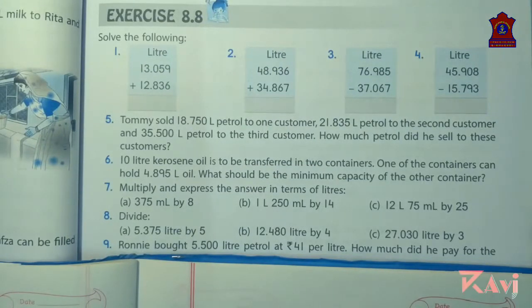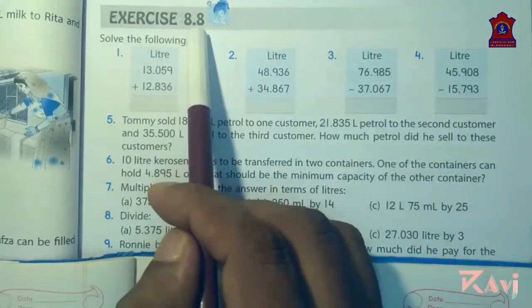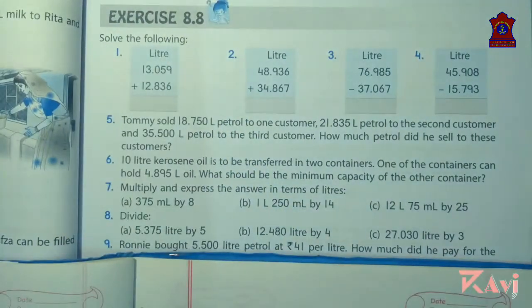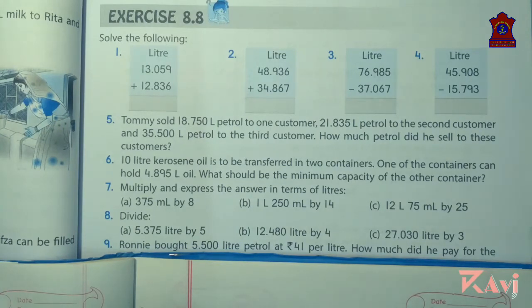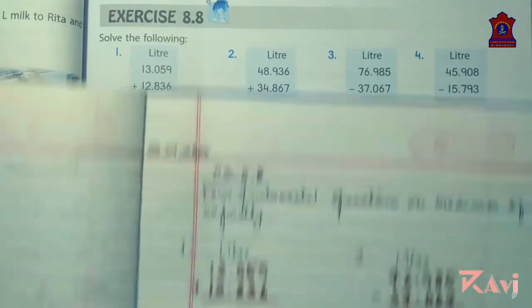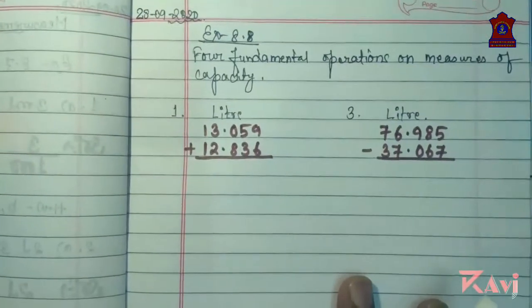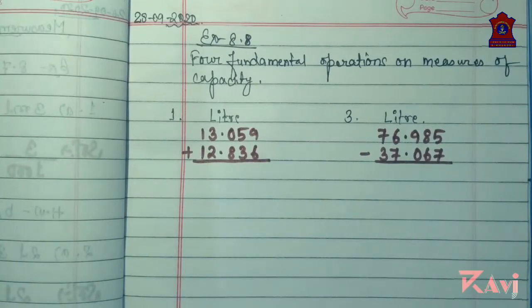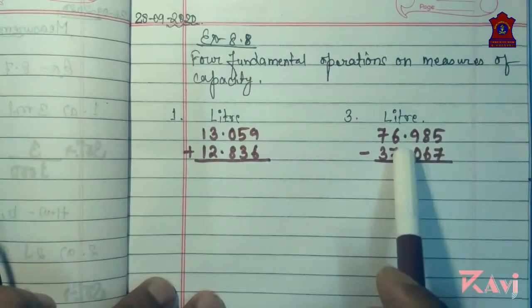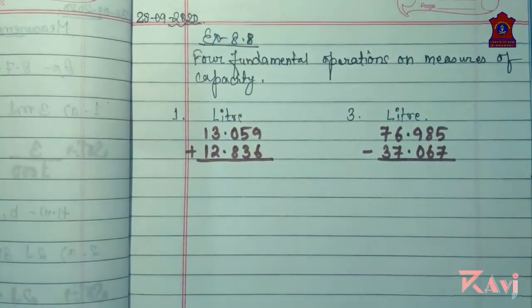Good morning students. Today we shall start Exercise 8.8, in which we will be learning four fundamental operations on measures of capacity. The four fundamental operations are addition, subtraction, multiplication, and division. I have already written two questions, one from addition and another from subtraction.